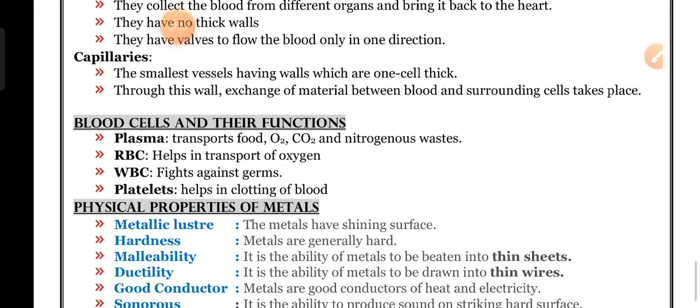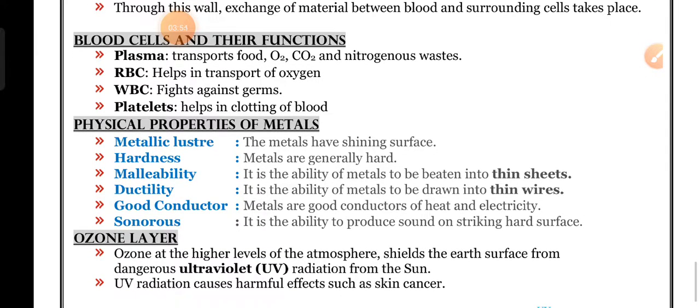Blood cells and their functions. Blood cells are plasma, RBC, WBC and platelets. Plasma transports food, oxygen, carbon dioxide and nitrogenous wastes. RBC helps in transport of oxygen. Why? Because in RBC, hemoglobin is there. Hemoglobin reacts with oxygen, turns into oxyhemoglobin. And in cells, whatever the carbon dioxide is produced in process of energy liberation, that carbon dioxide also reacts with the hemoglobin and produces carboxyhemoglobin, returns to our respiratory system. That's why RBC helps in transport of oxygen.